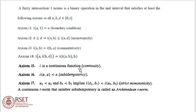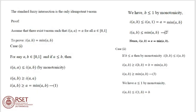Axiom I5: I is a continuous function. Axiom I6: I is sub-idempotent, that is I(A,A) less than or equal to A, and strict monotonicity property. A continuous T-norm that satisfies sub-idempotency is called an Archimedean T-norm. The standard fuzzy intersection is the only idempotent T-norm.